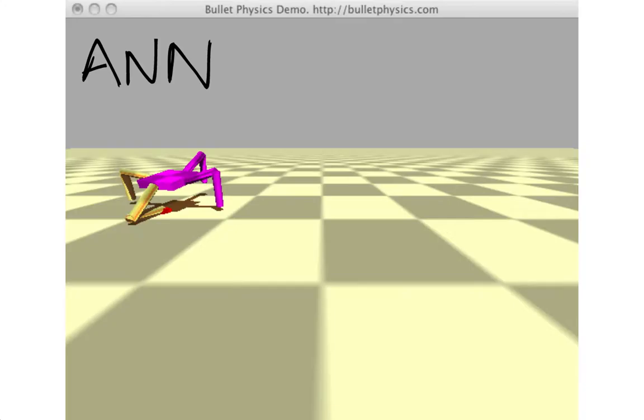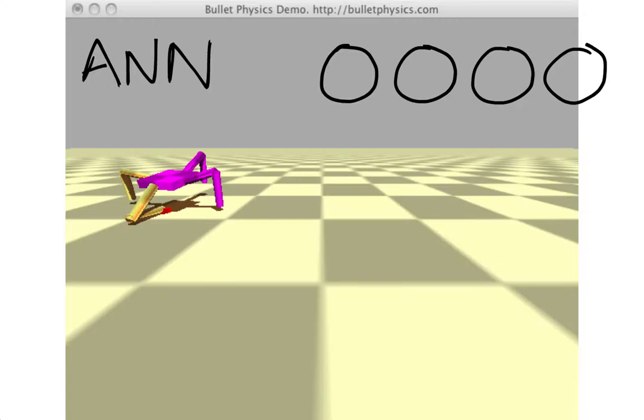In this particular ANN, we're going to have four neurons that correspond to the four touch sensors. We'll call these S1, S2, S3, and S4—four sensor neurons. At every time step of the simulation, we're going to set the value of these four neurons to the value of the touch sensors. In this example, you can see that one foot is on the ground and the other three feet are off the ground, so we'll set the first sensor to one and the other three sensors to zero.